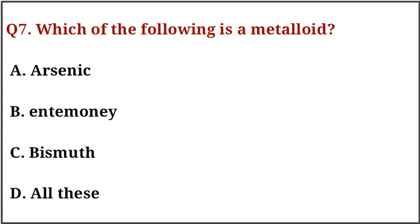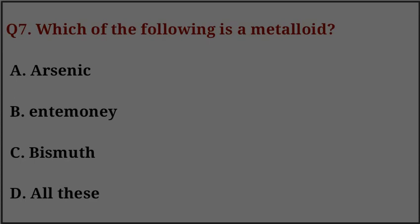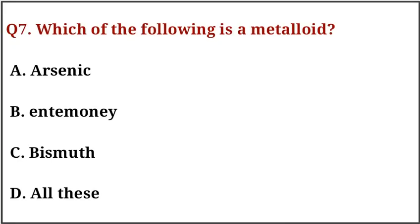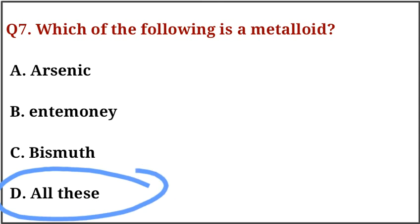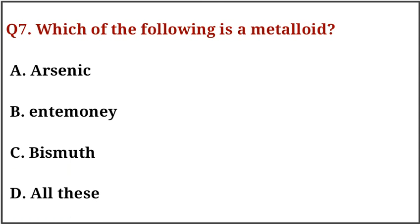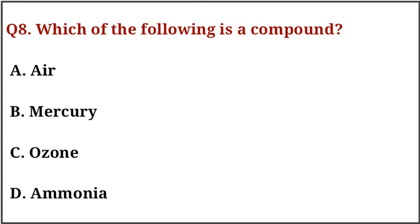Question number seven: which of the following is a metalloid? The correct answer is option number D, that is all of these. Question number eight: which of the following is a compound? The correct answer is option number D, that is ammonia.